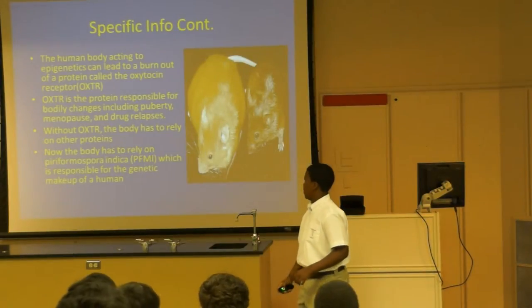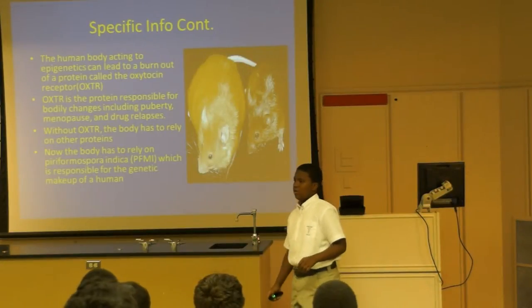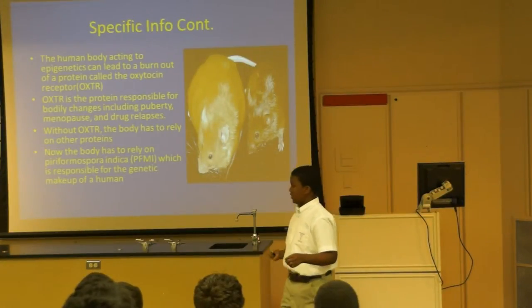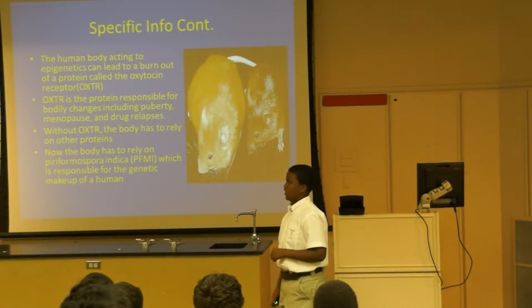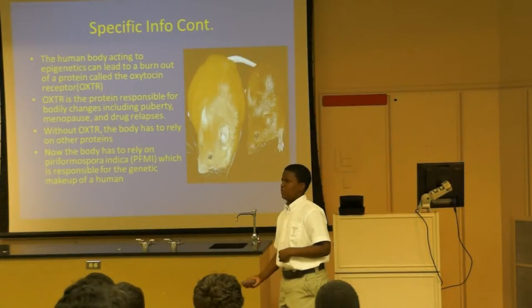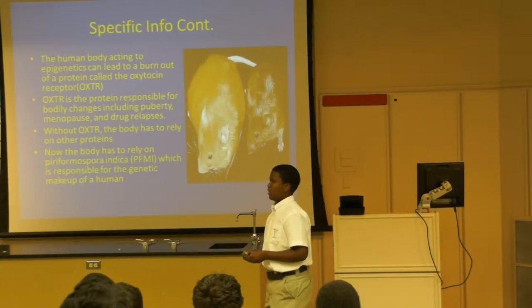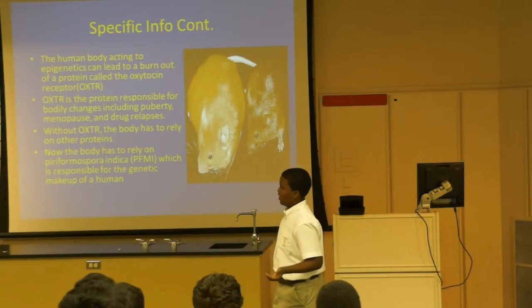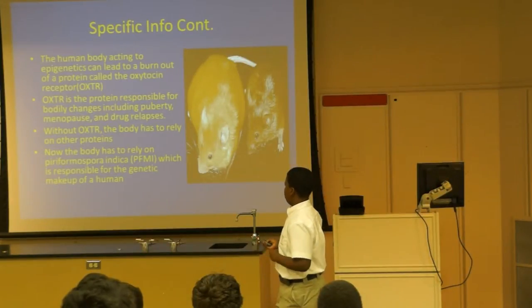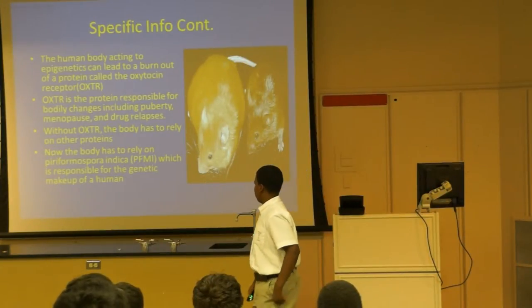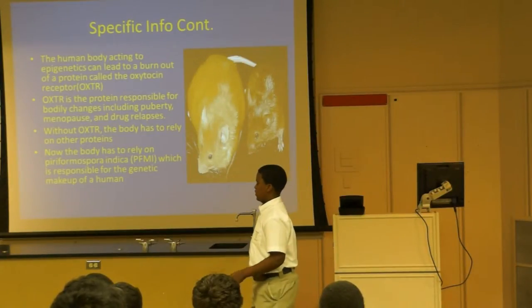Continuing, the human body has an epigenetic ability to burn out a protein called OXCR — the oxytocin receptor — which is a protein responsible for bodily changes. Without OXCR, the body has to rely on other proteins, including a form of spora indica, which is responsible for the genetic makeup of the human. And without the DNA having this protein, the DNA would genetically change.